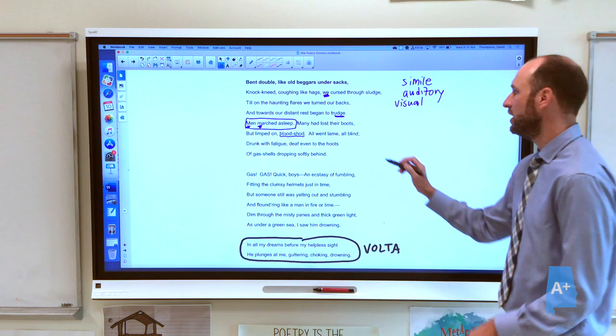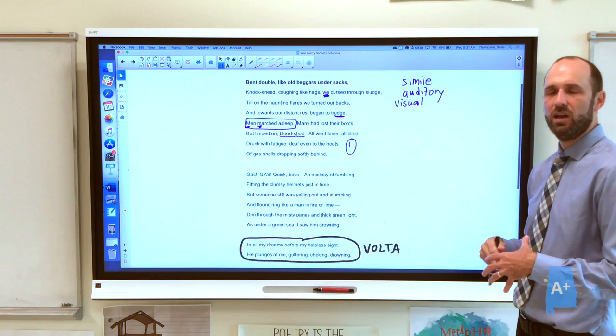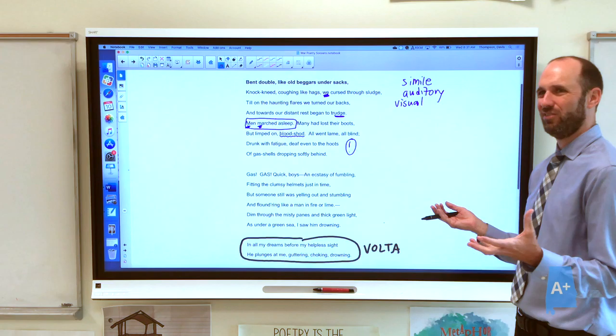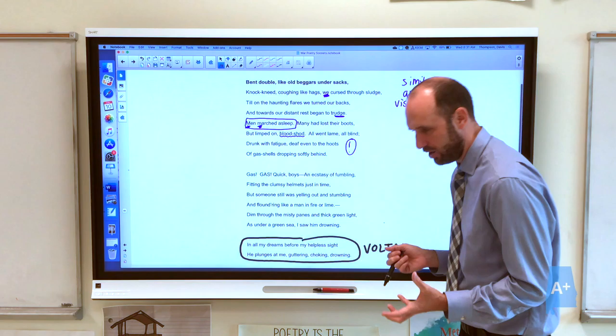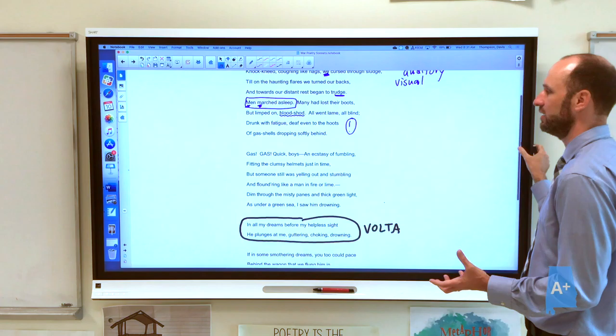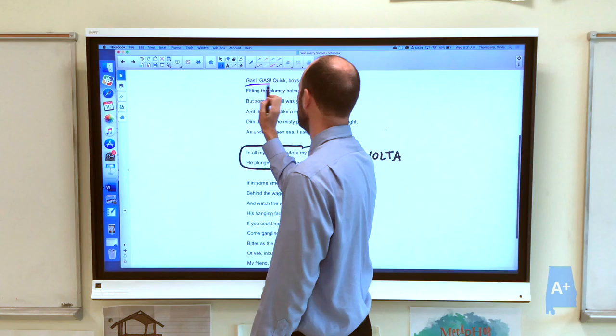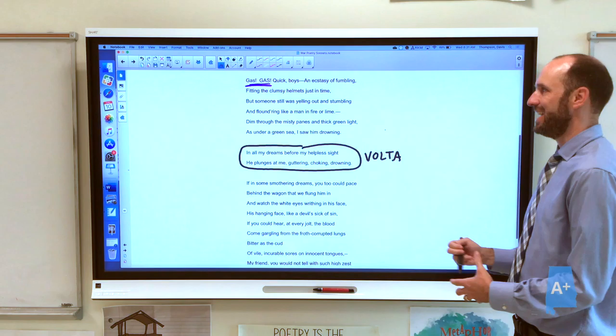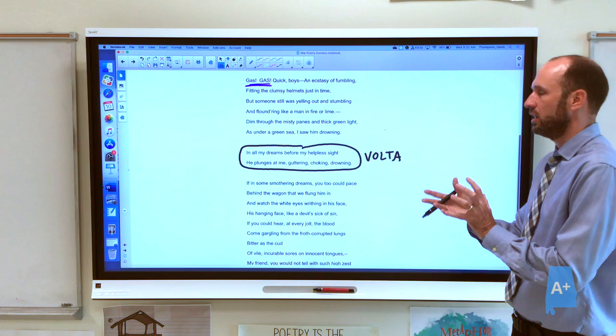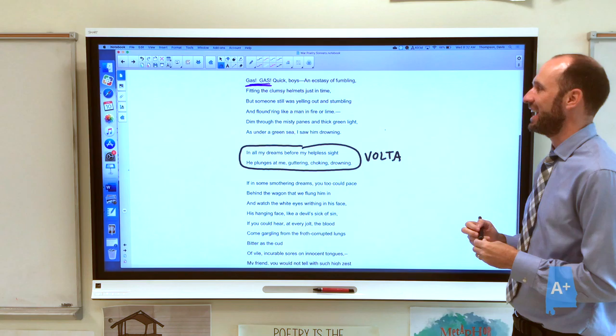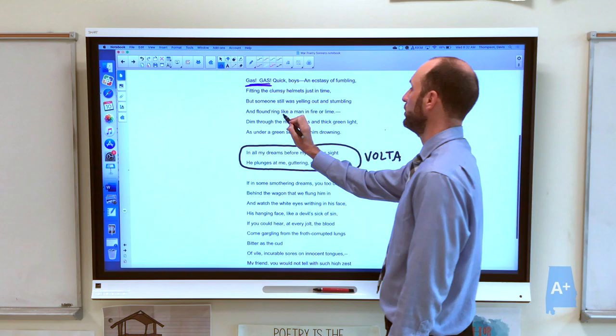So suddenly, we end up with action, right? This is fairly unusual for a sonnet which we've seen to be mostly lyrical, emotional declarations. But here we have a story. Something's happening. The men are already in a bad way, and they are so tired that they are deaf to the hoots. Again, we have an auditory image of the gas shells dropping behind. And suddenly, we are in the gas attack, right? We have the use of exclamation points. We almost hear the men crying out, there's gas, so you need to get your gas mask on. Gas. Gas. All caps. Quick, boys. An ecstasy of fumbling. Fitting the clumsy helmets just in time. But someone still was yelling out and stumbling and floundering like a man in fire or lime.